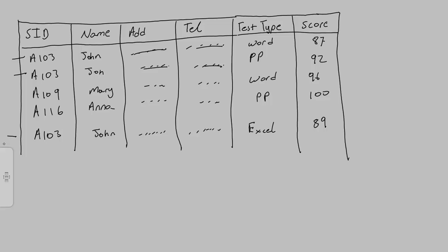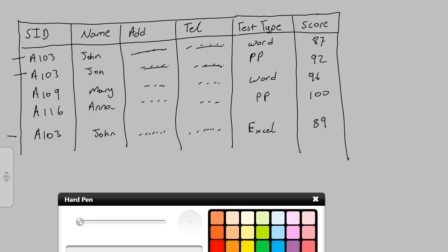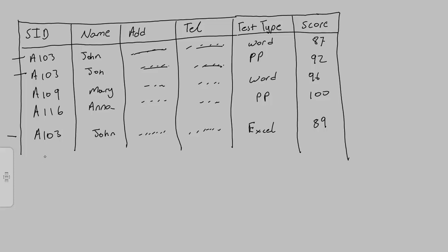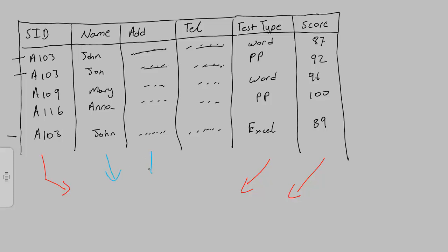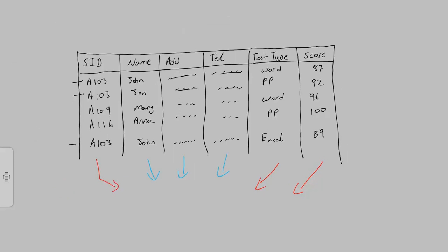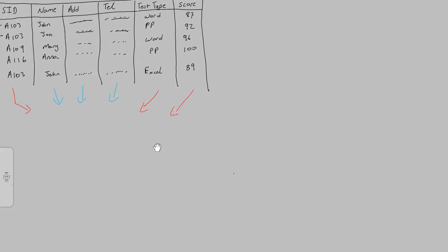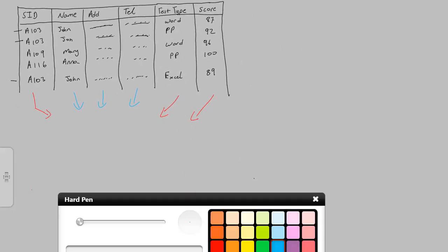To avoid this duplication we use what we call relational databases. Basically, a relational database will split this table up into smaller components. For example, I would take the student ID, test type, and score columns and make a separate table for the information I need to keep recording, and a separate table for the student information.